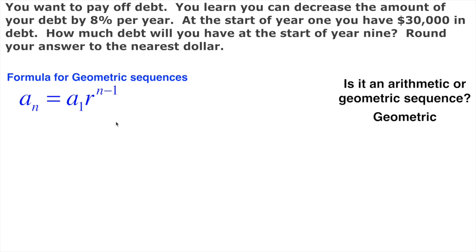Well we know some of that information so let's start filling in what we know. a₁ we know is $30,000. That's the first year we start off with $30,000. We also know r, r is the common ratio, this is the common amount that we're multiplying by every time. And it's 8% less every year. So if we had 100% the first time and it's 8% less, that would give us 92%. So r is 92% of the previous amount. So r in this case is going to be 0.92.